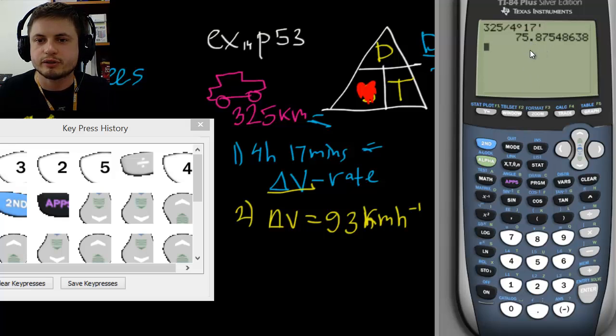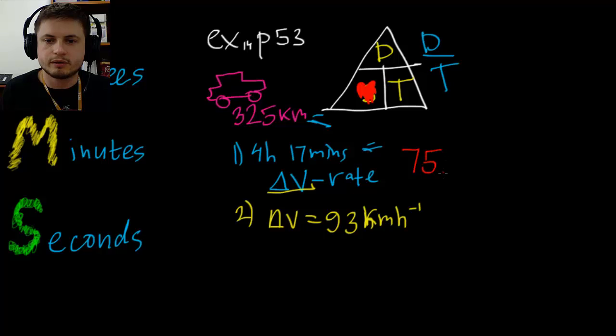And the answer is 75.87. So basically, that's our answer. We're going to write this with three significant digits, so it's 75.9 kilometers per hour. That should be your answer. 75.9 kilometers per hour. And that's the answer for number one.